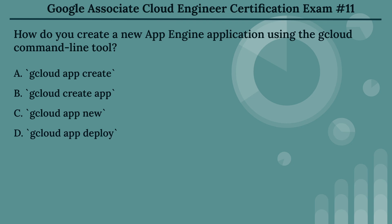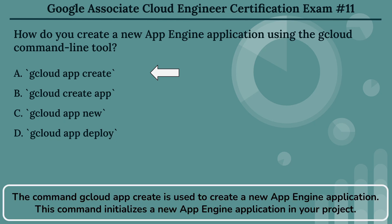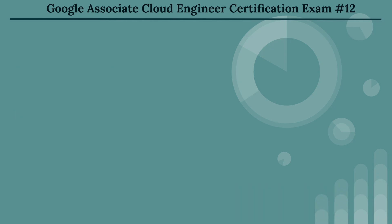The right answer is Option A: gcloud app create. The command gcloud app create is used to create a new App Engine application. This command initializes a new App Engine application in your project.